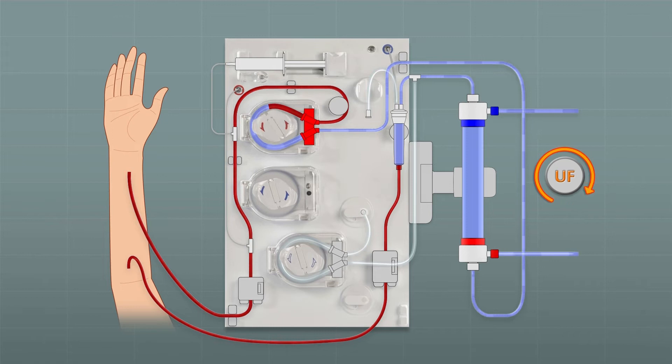Blood enters the arterial line as the blood pump turns. Simultaneously it also enters the venous line, caused by negative pressure from the UF pump.